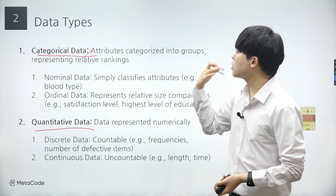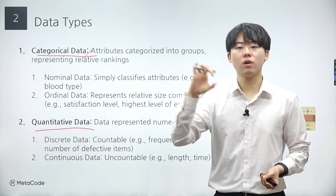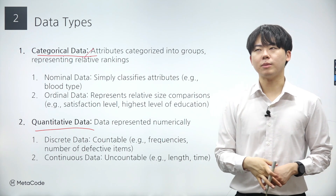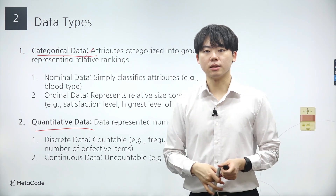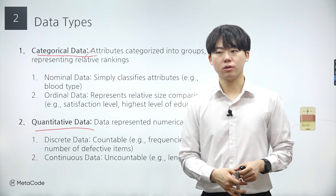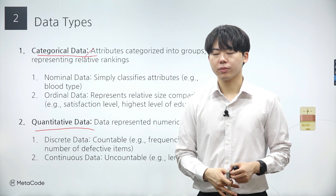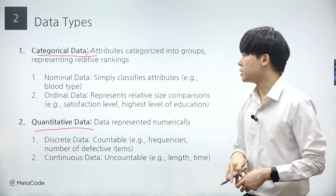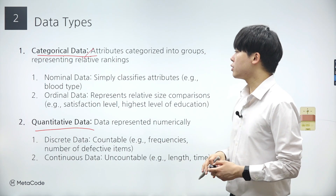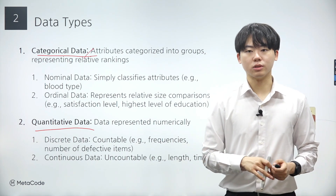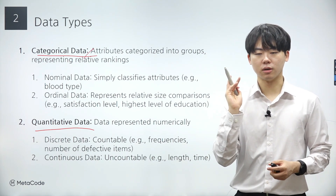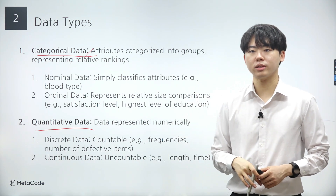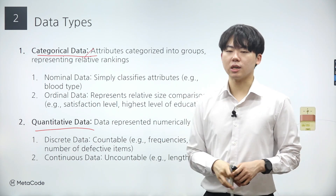Categorical data represents characteristics or attributes such as blood types like A, B, and O; occupations like teacher, doctor, and engineer; eye colors like blue, brown, and green; or grades like A, B, C, and so on. However, although both blood types and grades are considered categorical data, they possess different characteristics.